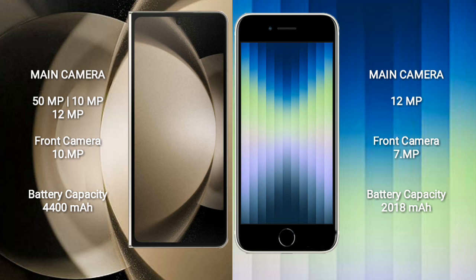Samsung Galaxy Z Fold 5 features a triple rear camera setup: 50MP plus 10MP plus 12MP, and a 10MP front camera. iPhone 8C features a single 12MP rear camera and a 7MP front camera.